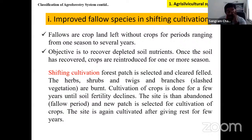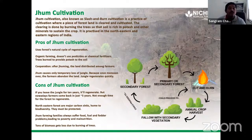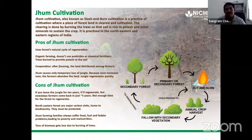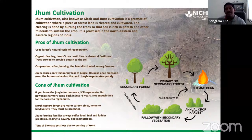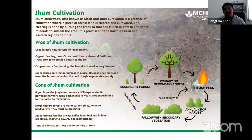Improved fallow is a strategy to reduce shifting cultivation. The objective is to recover depleted soil nutrients once the soil has recovered and crops are reintroduced. In local language, this is called Jhum cultivation or Zoom cultivation. Shifting cultivation is also known as slash and burn cultivation or axe cultivation. It is mainly practiced in northeastern India.